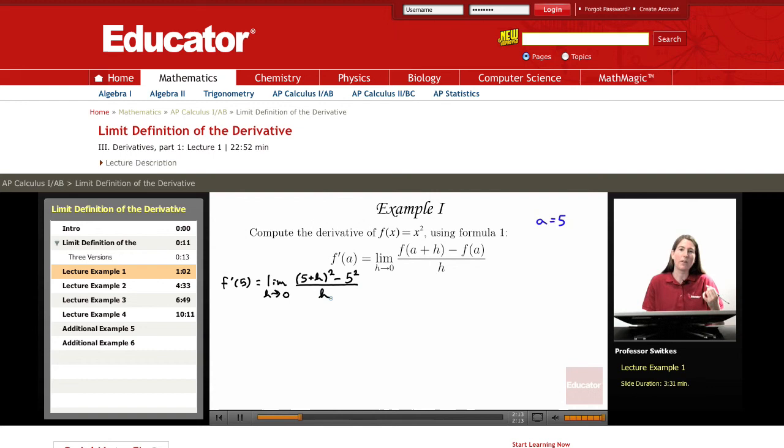Once you have the correct setup, your job becomes simply simplifying the fraction and taking the limit as h approaches 0. We have the limit as h approaches 0 of this fraction. Let's expand (5+h)² to get 25 + 10h + h² minus 25, all over h.